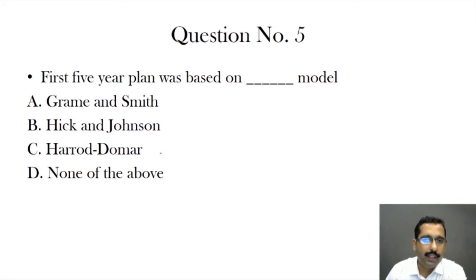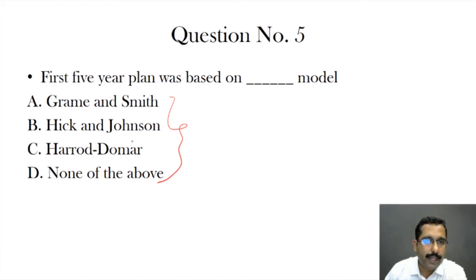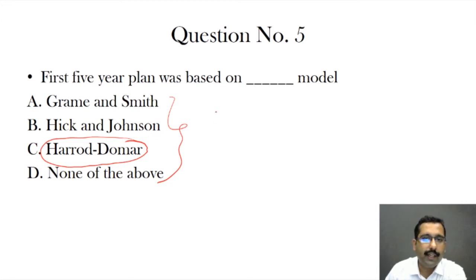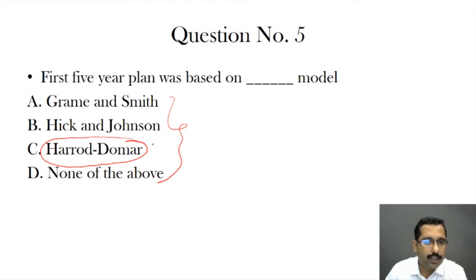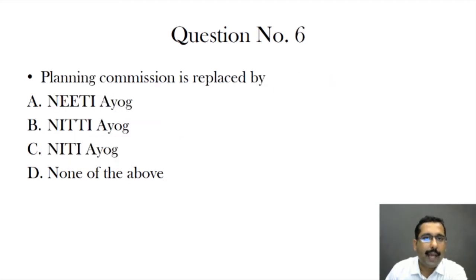Question five: the Five Year Plan was based on which model? Such questions are memory-testing questions — we just have to remember that the Five Year Plan was based on the Harrod-Domar model. India introduced these plans in the 1950s, and we have had 12 Five Year Plans. The answer is option C.